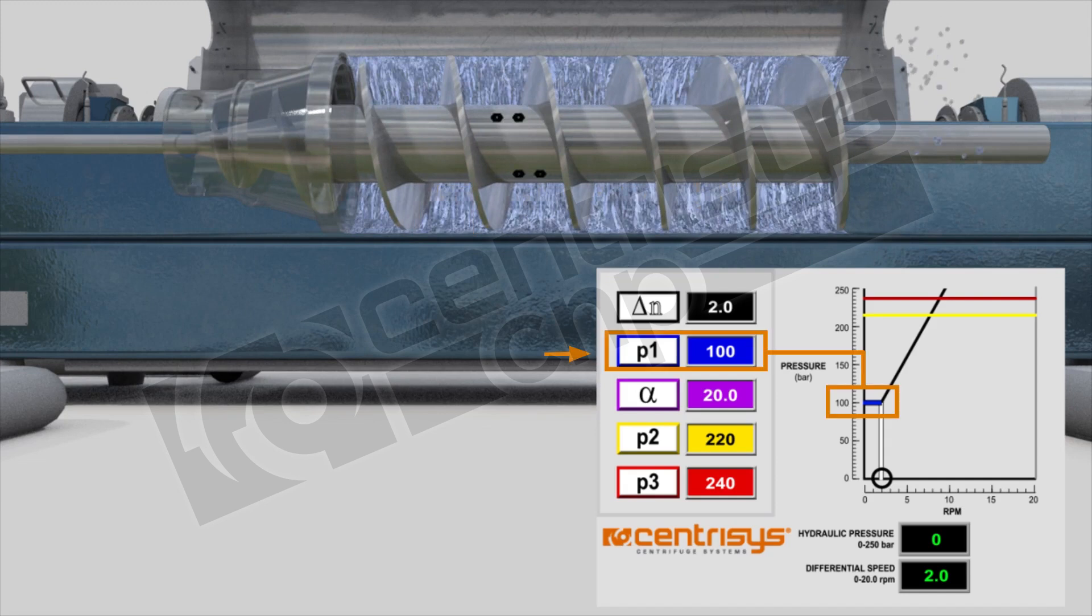P1 is the start of regulation. It is not a pressure set point but it's the point at which pressure it starts regulating itself. For every increase in pressure there's an increase of differential speed here.